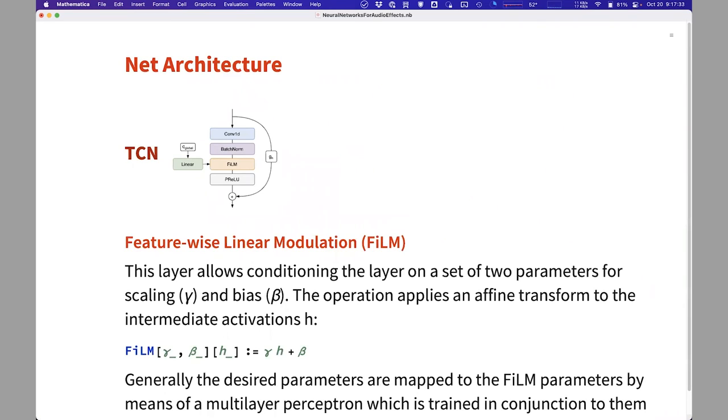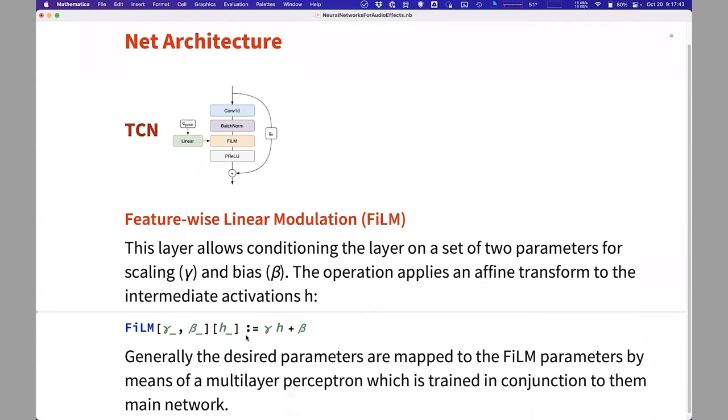And then for each of the TCN blocks, there's a small linear transformation that transforms the giant vector into the two gamma and beta parameters. This was introduced in an image question answering network, where the same operation was applied to each of the residual blocks there. And this is doing essentially the same thing.